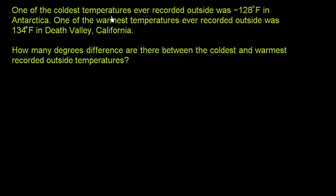One of the coldest temperatures ever recorded outside was negative 128 degrees Fahrenheit in Antarctica. One of the warmest temperatures ever recorded outside was 134 degrees Fahrenheit in Death Valley, California.